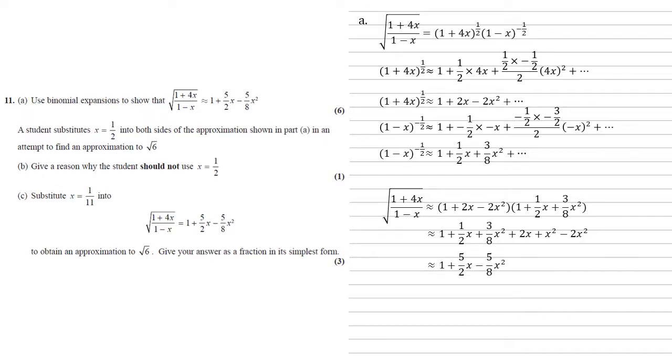Simplifying this gives us 1 plus 5 over 2x minus 5 eighths x squared as required.